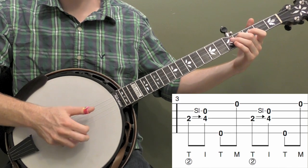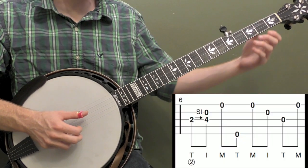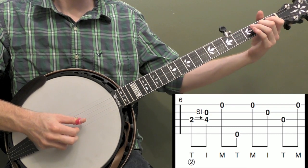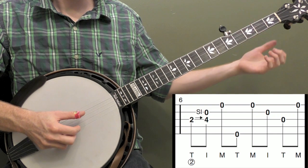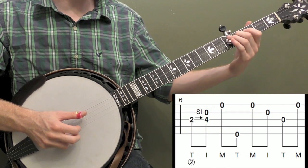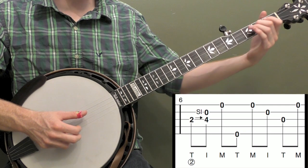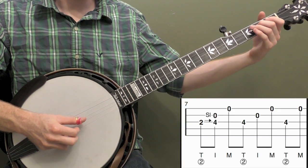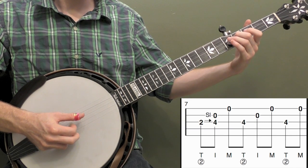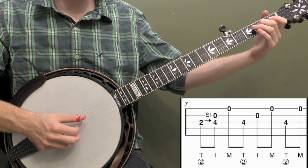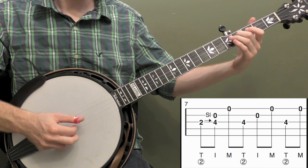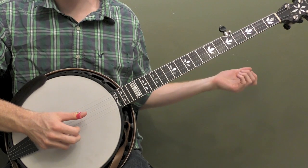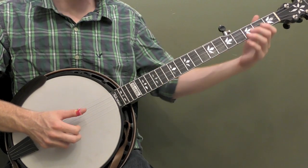So once you get that down, let's try some different right hand rolls. Let's try like the forward reverse roll. So same concept there, I'm sliding up, and then I'm playing that open second string. Or the forward roll, you can keep it up there too once you slide up. So you can use any right hand roll once you get it down, as long as you're doing that first thumb and index.